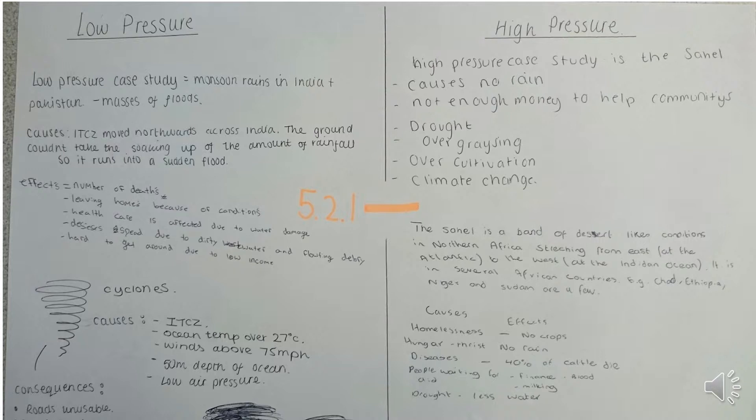In the Sahel, high pressure dominates, and sometimes monsoon rains don't arrive, causing the spread of desert-like conditions — no rain, droughts, crops fail. The soil becomes eroded by the wind and baked by the sun, so any rain which does fall will not be absorbed into the ground and will drain directly into watercourses and off the land.